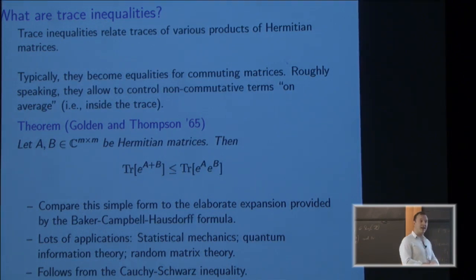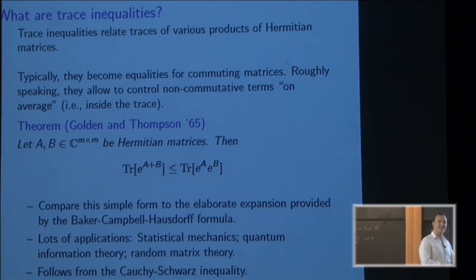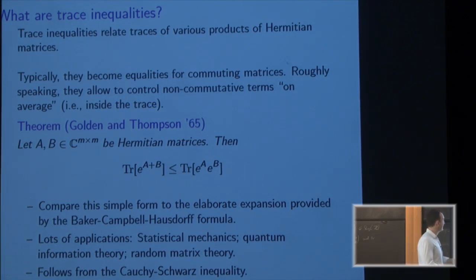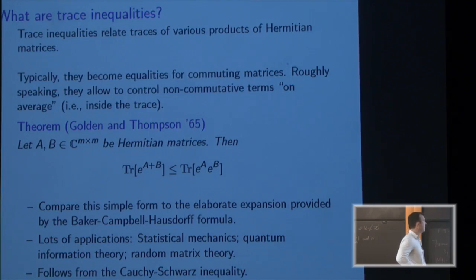Instead, if you take the trace one, and you only care about inequalities two, things become much simpler, as you can see. The inequality is Tr[e^(A+B)] ≤ Tr[e^A e^B]. Their mission, that's why Hermitian.